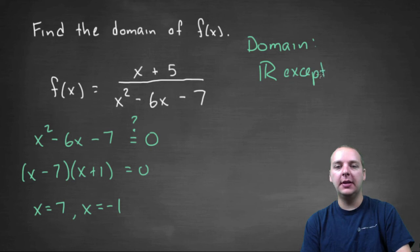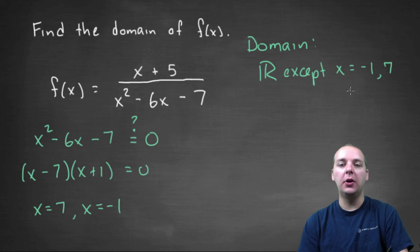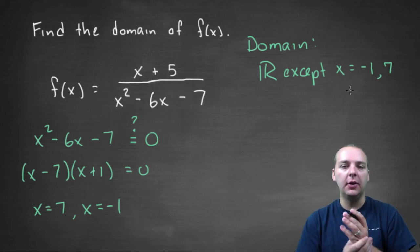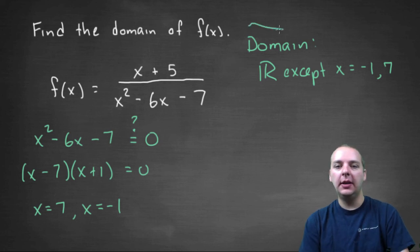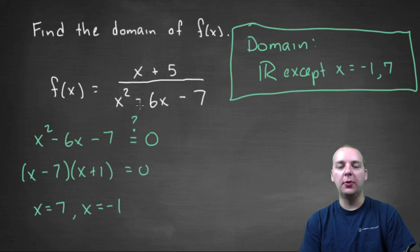Except we have to take out negative one and we have to take out seven, so we have to take out negative one and seven. You can either write it that way, or you can write x equals negative one comma x equals seven, that doesn't really matter too much. So in any case, this is the domain of this particular rational function.